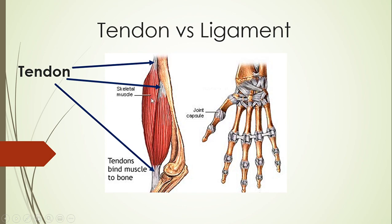The force generated in the muscle is being transferred through this tendon to allow the bone to move. So that's what causes locomotion to occur. At the same time, the tendon is allowing stability to be created within the joint. So although this is the joint occurring here, there's also a joint happening at your shoulder up at the top. These tendons are providing the stability as well as allowing for motion to occur.